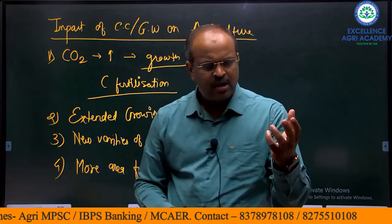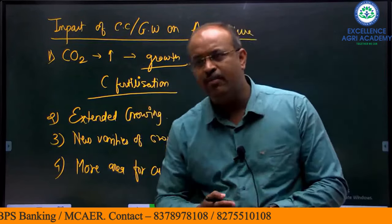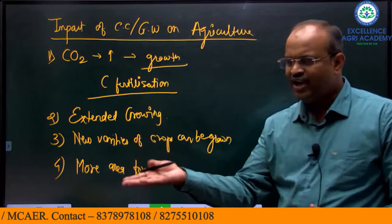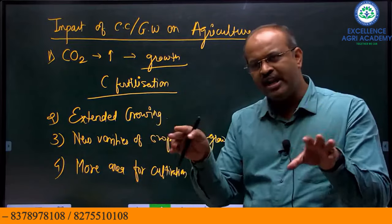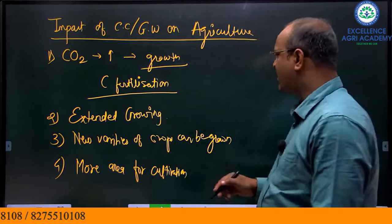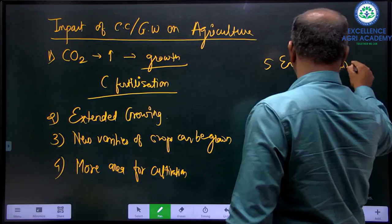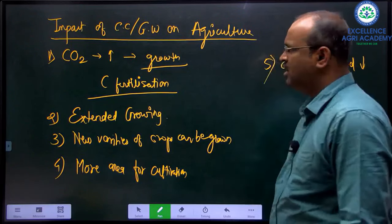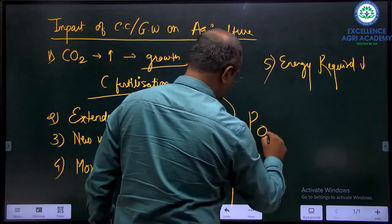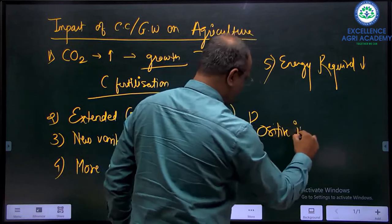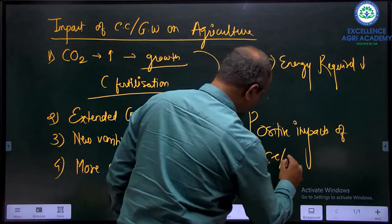More area for cultivation is available. If the temperature is more, the energy required to maintain temperature in poly houses or greenhouses will be reduced. So these are the positive impacts of climate change or global warming on agriculture.